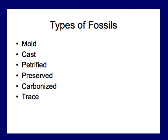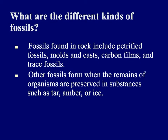Now, there are several kinds of fossils. We have mold, we have a cast, we have petrified, preserved, carbonized, and trace. Fossils found in rock include petrified fossils, molds and casts, carbon films, and trace fossils. Other fossils form when the remains of organisms are actually preserved in substances such as tar, amber, or ice.